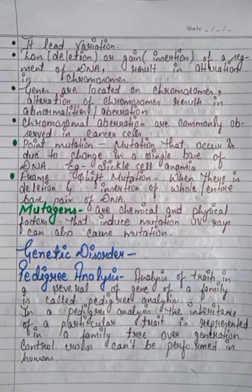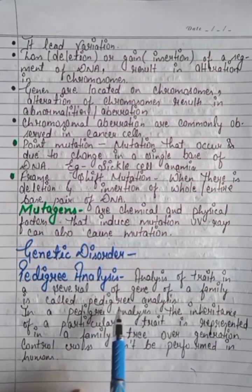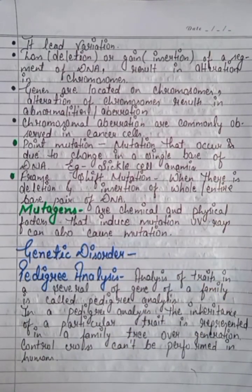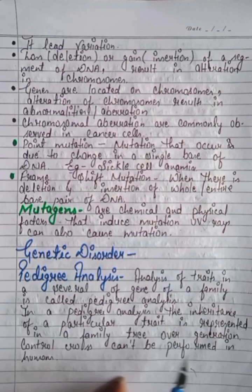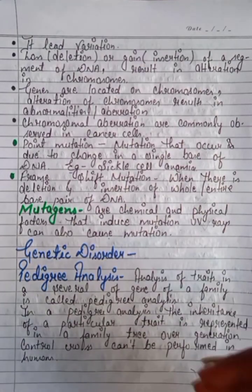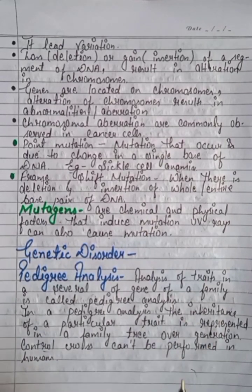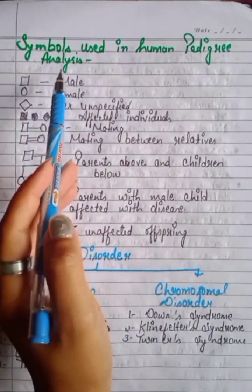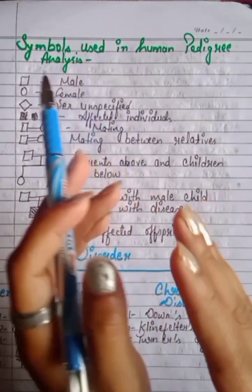Genetic disorder — first we will learn pedigree analysis. Analysis of traits across several generations of a family is called pedigree analysis. In pedigree analysis, the inheritance of a particular trait is represented in a family tree. Control crosses cannot be performed in humans, so we use pedigree analysis instead.